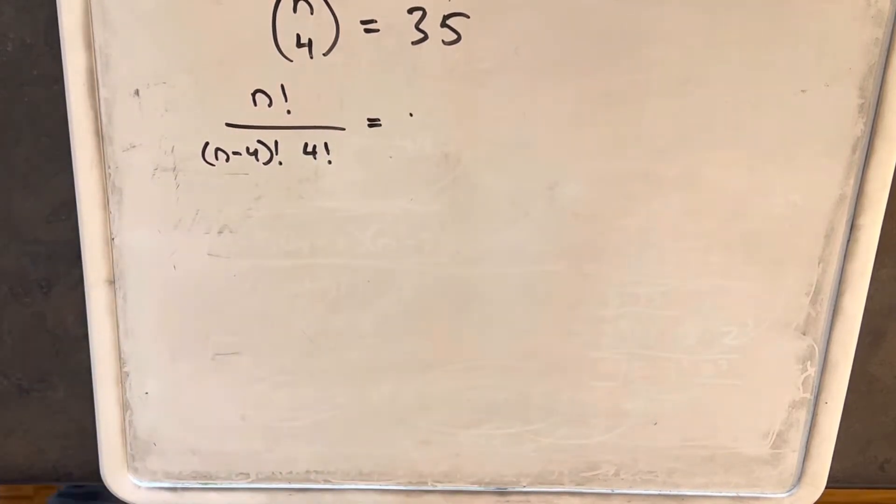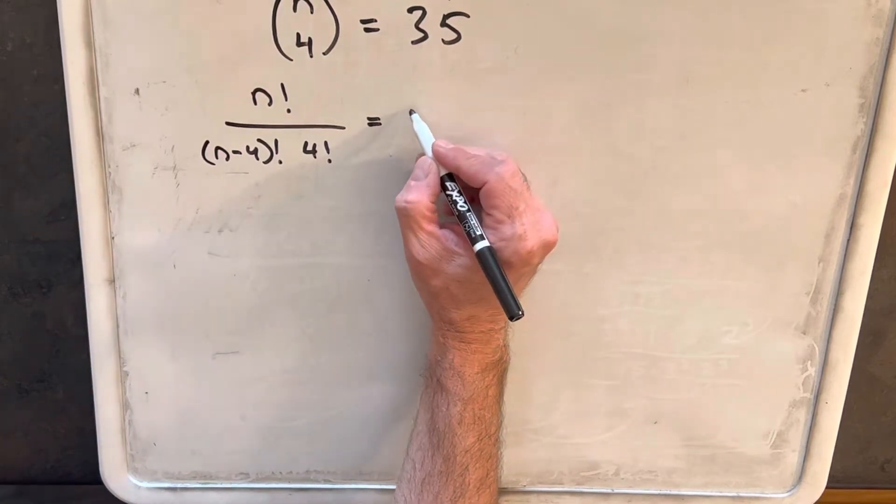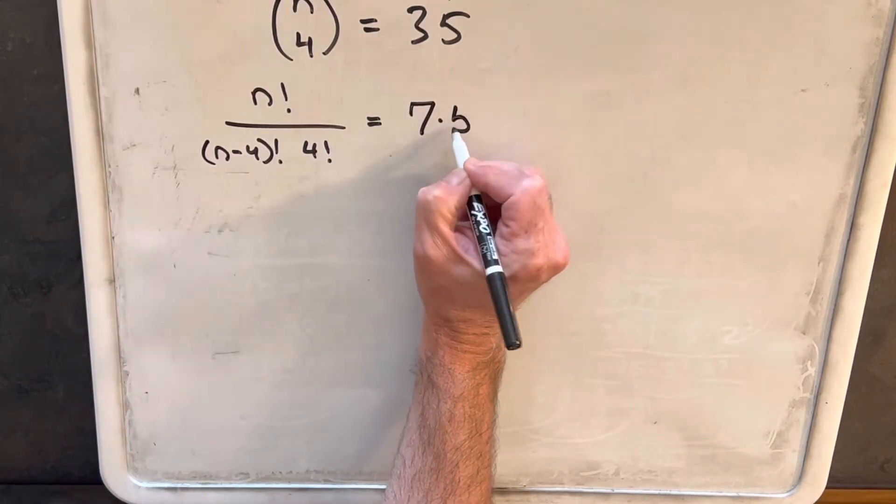And actually, we're going to want the prime factorization, so I'm going to write this 35 as 7 times 5.